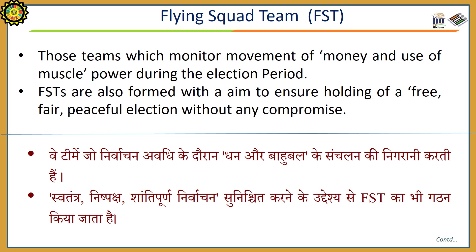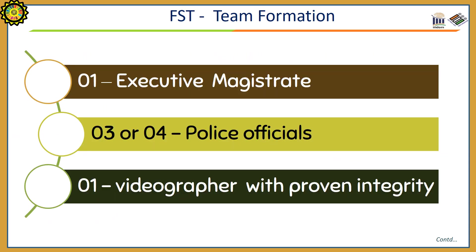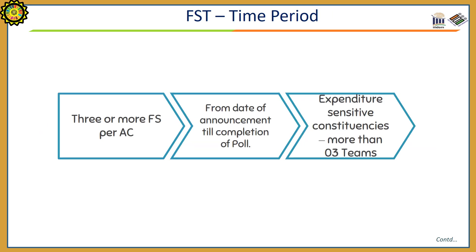Flying Squad Teams (FSTs) are those teams which monitor movement of money and use of muscle power during the election period. FSTs are also formed with the aim to ensure holding a free, fair, and peaceful election without any compromise. The team of FST includes one executive magistrate, three to four police personnel, and one videographer. The FST will work from the date of announcement of the election till the completion of poll. There will be three or more FSTs per assembly constituency, and expenditure-sensitive constituencies may have more than three teams.